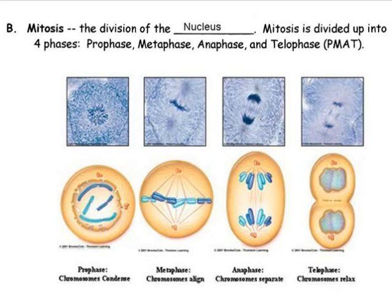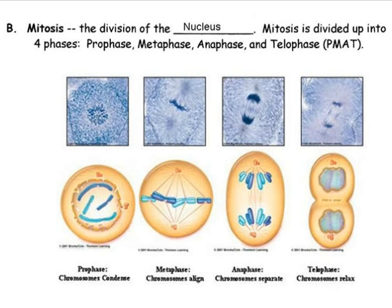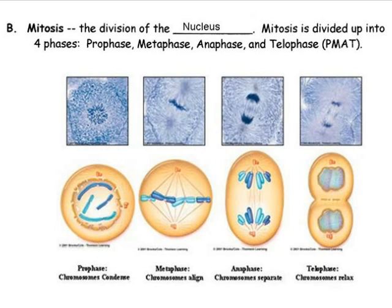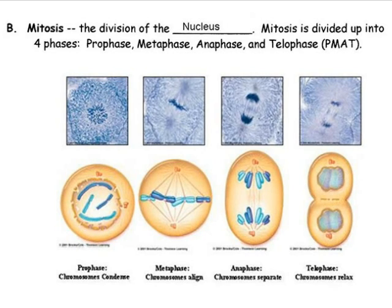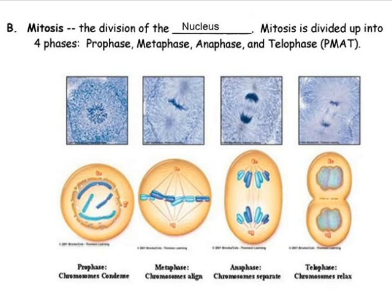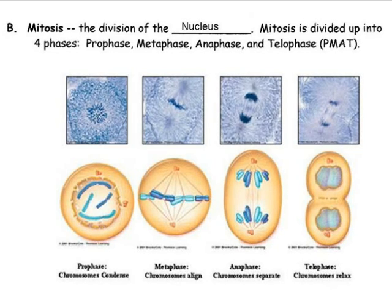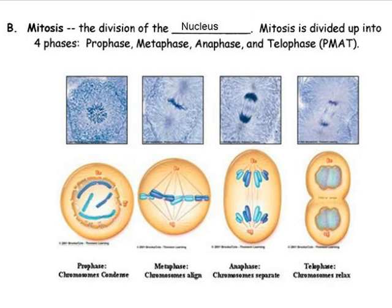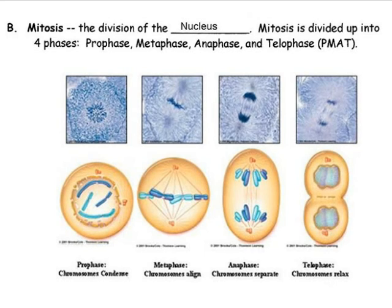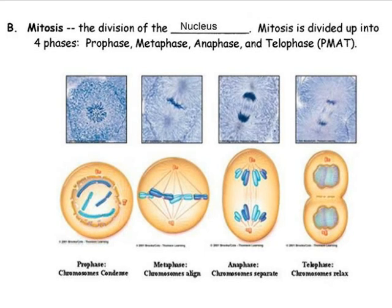The first part of the cell to divide is the nucleus. It has four steps: prophase, metaphase, anaphase, and telophase. Follow along with the diagram as we look at an overview of mitosis. The images across the top are micrographs of actual animal cells carrying out the process of mitosis. The pictures across the bottom are diagrams to help you better understand what is happening in the cell.